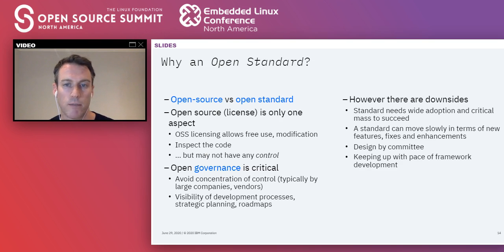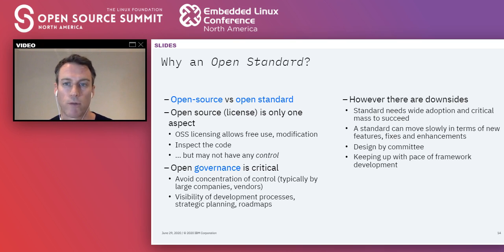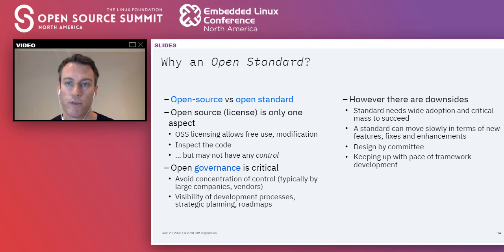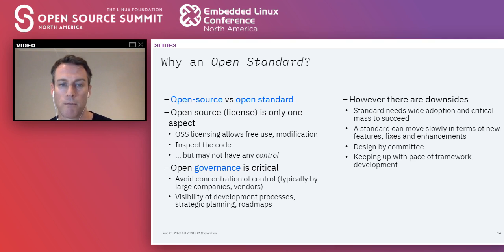It's great to have a standard that is ideally open source, but there's a difference between open source and open governance. The open source license is only one aspect — we want a permissive license allowing us to inspect, modify, and use the code freely. But even being on GitHub doesn't mean we can exert control over project decisions. Open governance is critical: it avoids concentration of control in the hands of a few large vendors, gives clear visibility into the development process, how decisions are made, and strategic roadmaps. There are downsides — standards need critical mass and can move slowly — but overall open governance brings far more benefit.